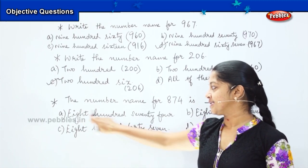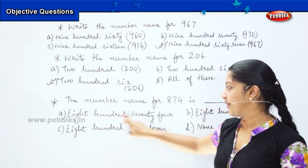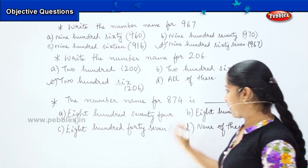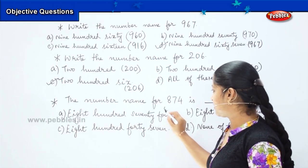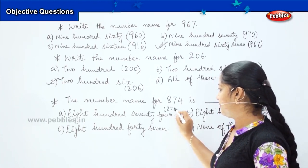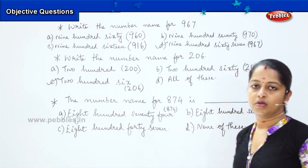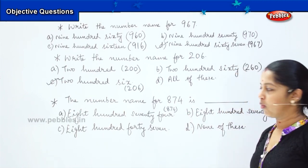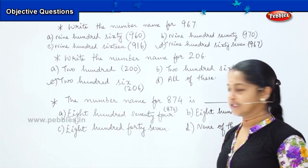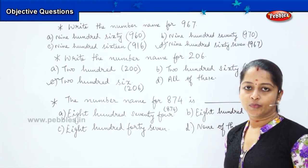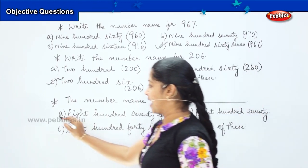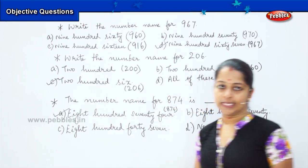The first option says 874. How can you write it? You will write it as 874. So you have got the first option itself correct, and it is matching with the question being asked. My answer will be option A.